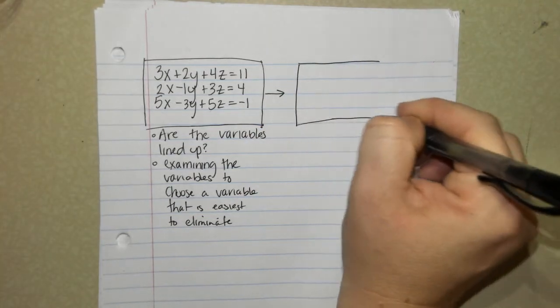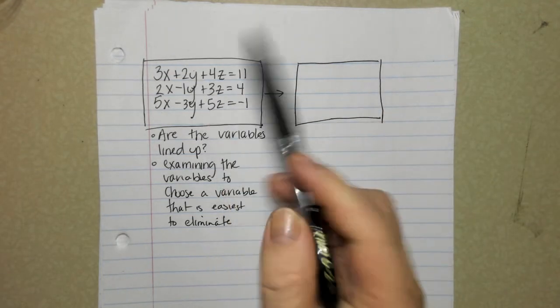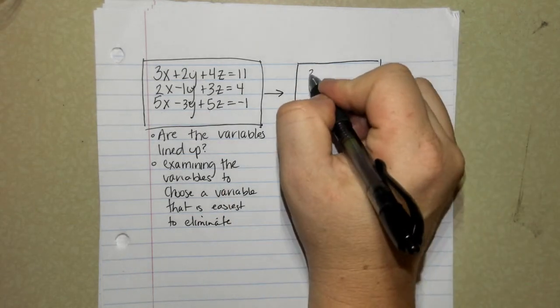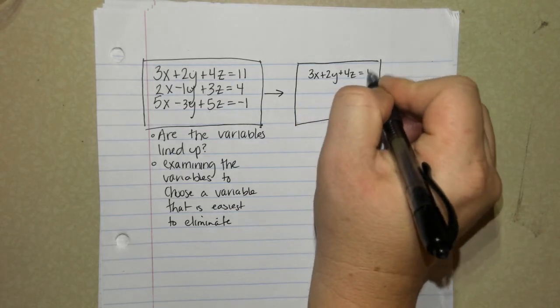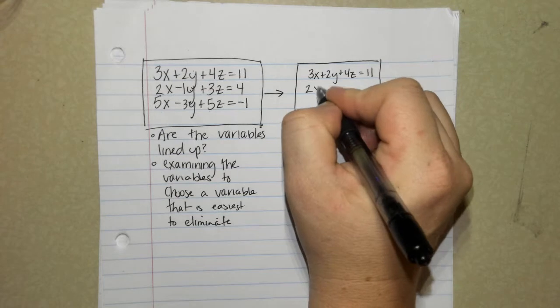So what I'm going to do is I'm going to choose two equations, and I'm going to choose the first two. So really small, I'm going to write down the first equation. Underneath it, I'll write down the second equation.